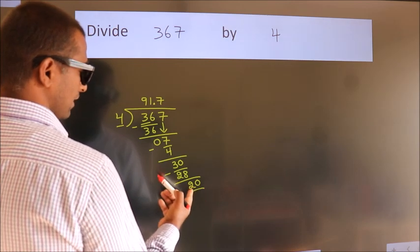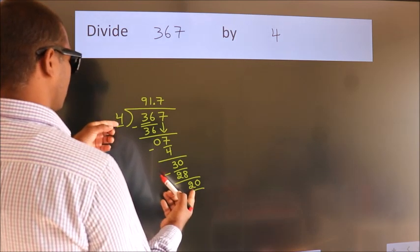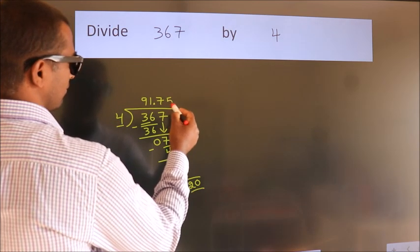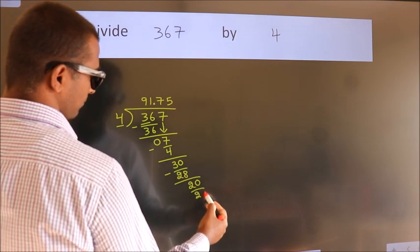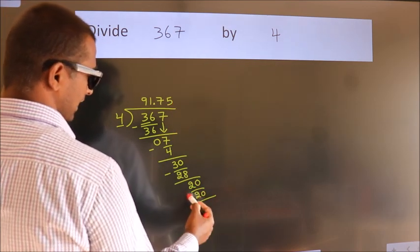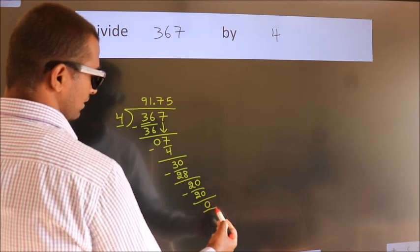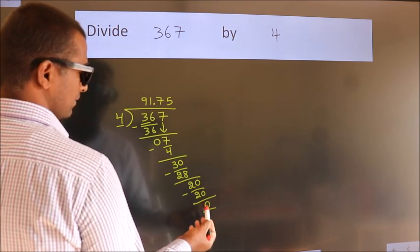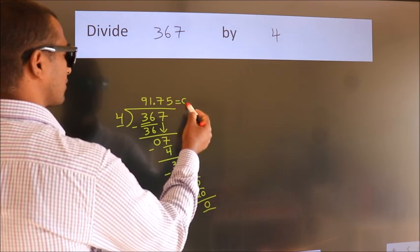In the 4 table, 4 fives, 20. Now we subtract. We get 0. We got remainder 0, so this is our quotient.